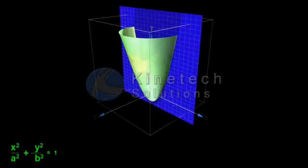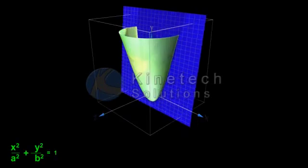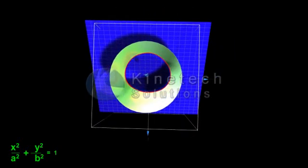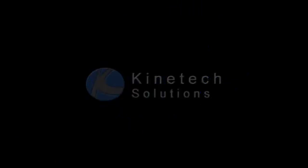Ellipse: If the cutting plane is slightly tilted and cuts only one nape of the cone, the curve is an ellipse.